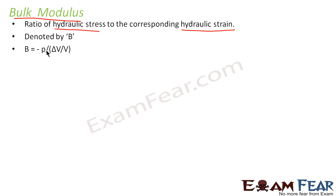B is equal to minus P divided by (ΔV/V). The numerator is nothing but hydraulic stress, and as we already mentioned, hydraulic stress is equal to hydraulic pressure in magnitude, so we can write it as P. The denominator, ΔV/V, is the hydraulic strain, which is the change in volume divided by volume. It is also known as volumetric strain.